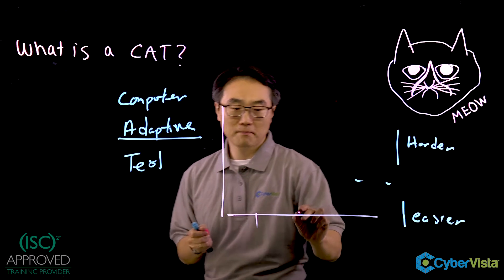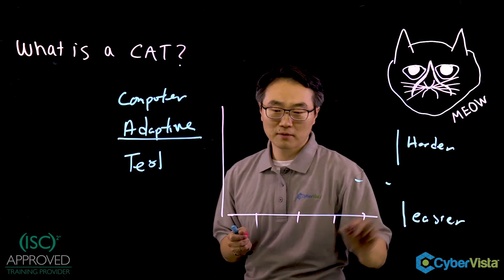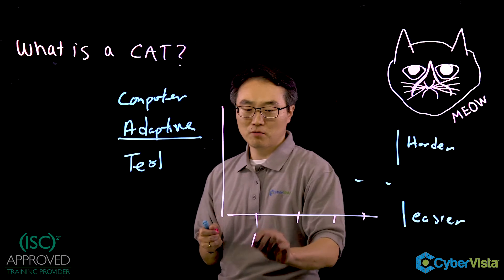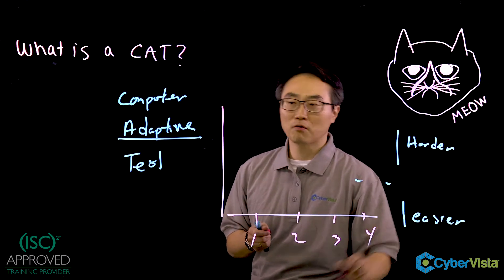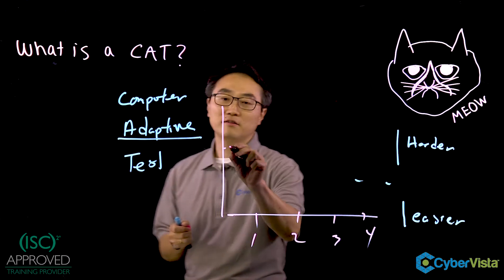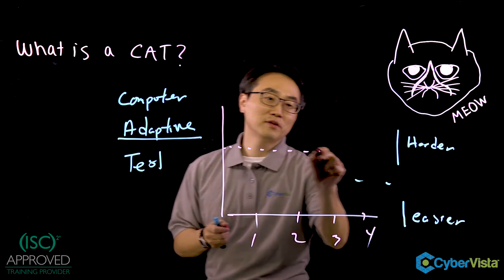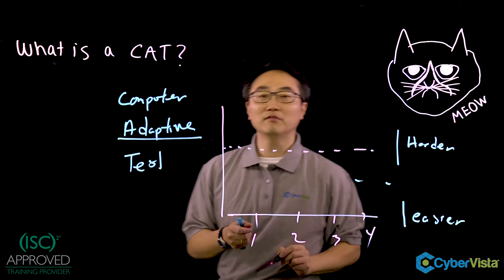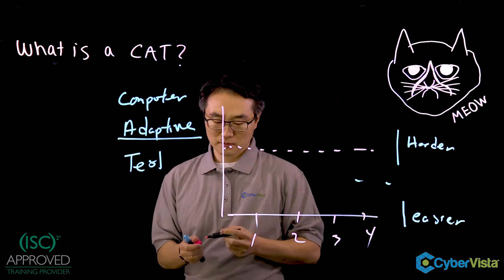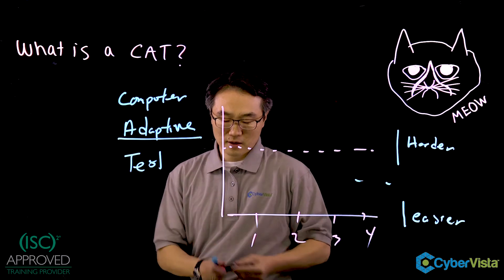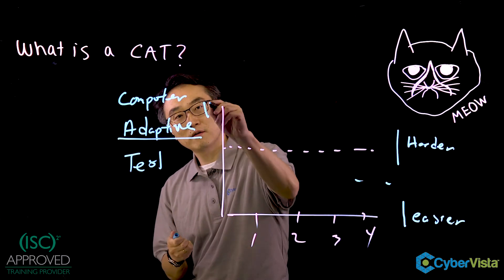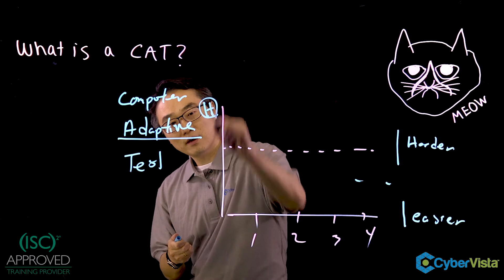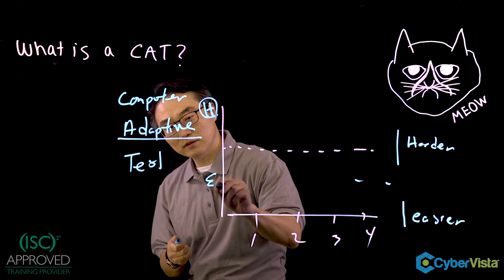I'm going to put at the bottom axis question number 1, 2, 3, 4. And let's assume for the moment this is a passing level in the middle, this is hard, and this is easy.